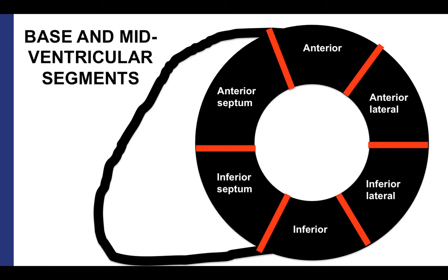At the basal and midventricular levels, there are six segments in the AHA model. Starting at the anterior segment and moving clockwise, these are the anterior, anterolateral, inferolateral, inferior, inferoseptal, and anteroseptal segments. The septal segments are defined based on the insertion points of the right ventricle, specifically the anterior right ventricular insertion point and the inferior right ventricular insertion point.